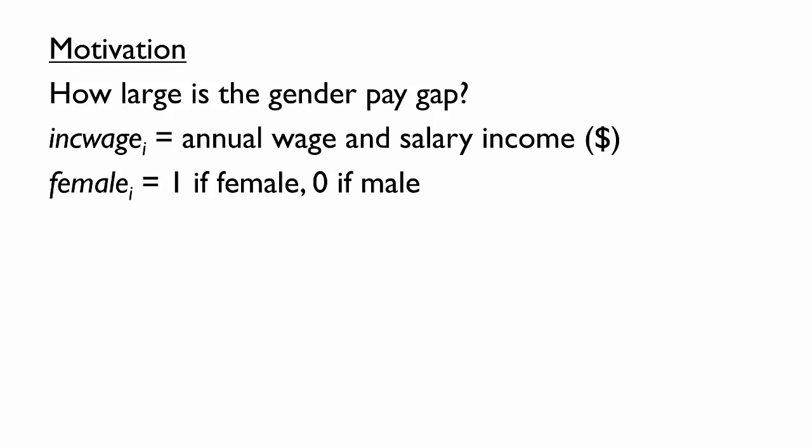If we had a sample of individuals, we need some measure of their pay, such as the annual wage and salary income. In other words, income earned from working measured in dollars. We also need to know their gender. What would this variable look like? Gender is a qualitative characteristic rather than a numerical one, but it could be represented numerically. Suppose we had a variable female that was equal to 1 if the individual is female and 0 if the individual is male.